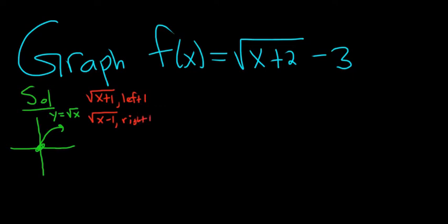Whenever you add and subtract from the x, it's the opposite way. If you see a plus, it's left. If you see a minus, it's right. Now whenever the number is outside of the square root, it's up if it's positive, and if it's negative, then it would be down.